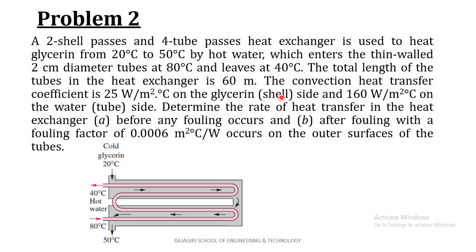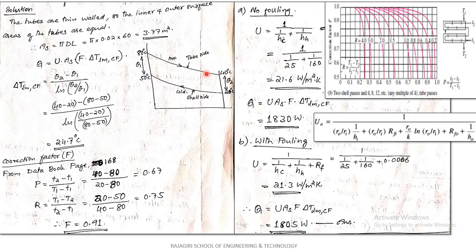Draw the temperature profile for counter flow: water is on the tube side and glycerin is on the shell side. All four temperatures are given. For a counter flow heat exchanger, θ1 = (Th,in − Tc,out) and θ2 = (Th,out − Tc,in). Calculate θ1 and θ2 and the counter flow LMTD, which comes out to 24.7°C.